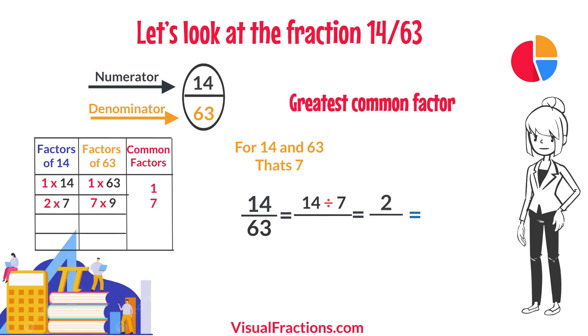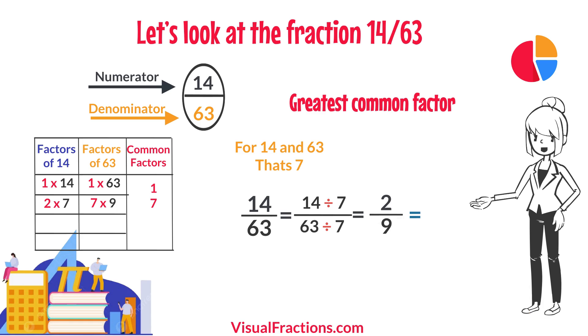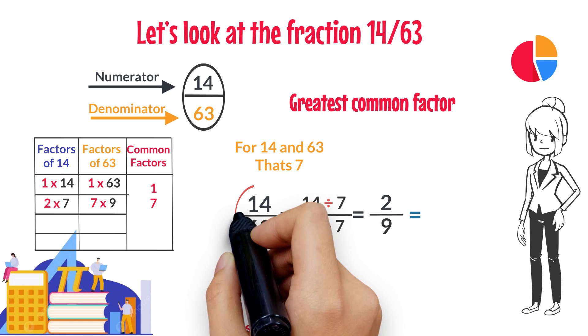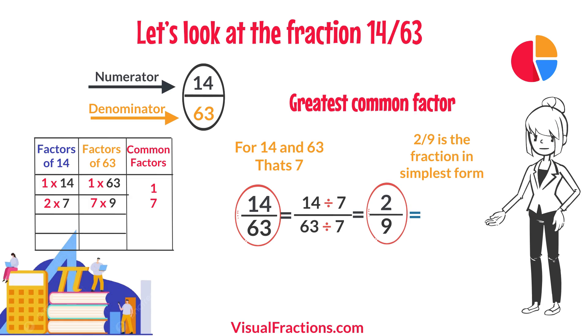We start by dividing 14 by 7, which gives us 2. Then we divide 63 by 7, which results in 9. So simplifying 14/63, we end up with 2/9, which is the fraction in its simplest form and cannot be reduced any further.